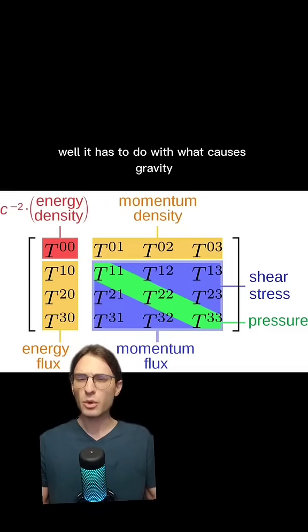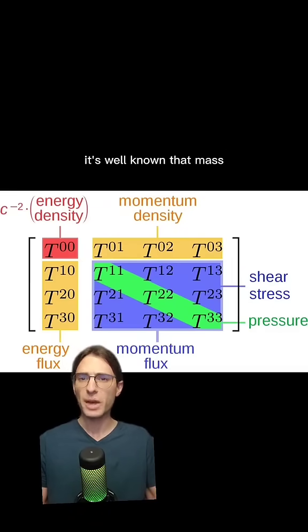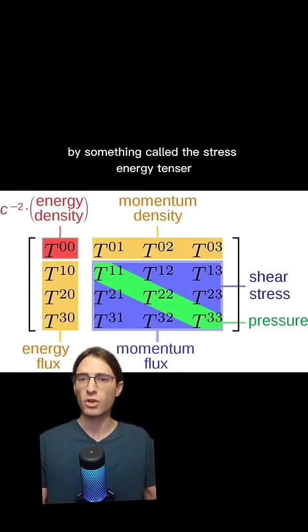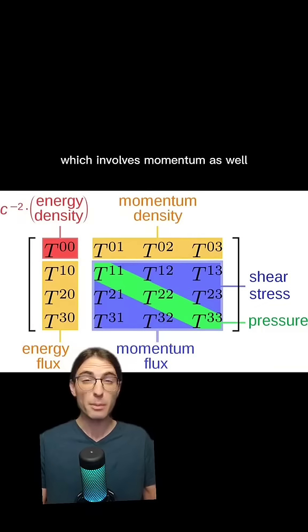So why does all this happen? Well, it has to do with what causes gravity. It's well known that mass and energy cause spacetime to curve, but that's not the full story. In fact, spacetime curvature is sourced by something called the stress-energy tensor, which involves momentum as well.